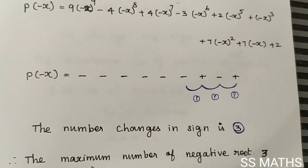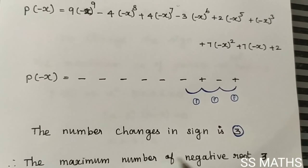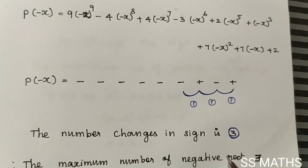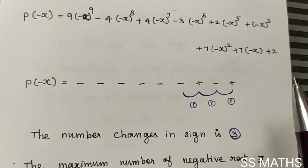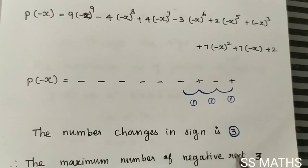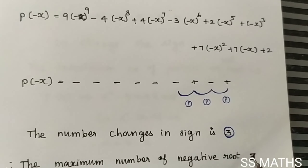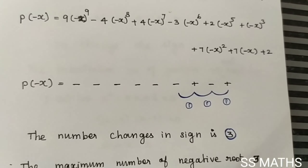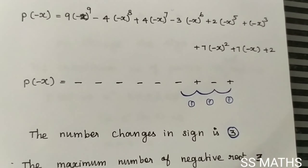Therefore, the maximum number of negative roots is 3. That's all. Thank you.